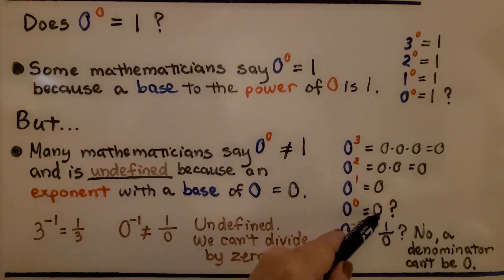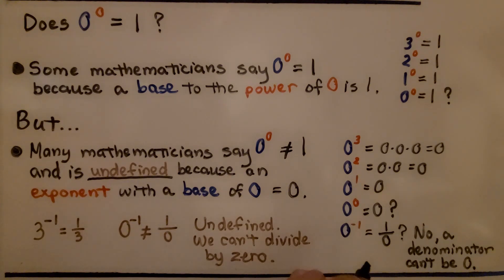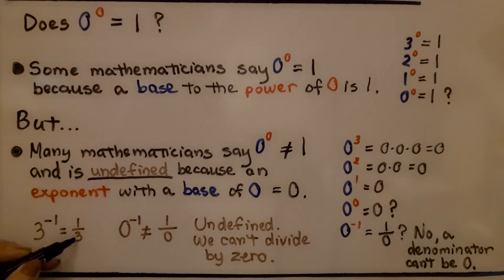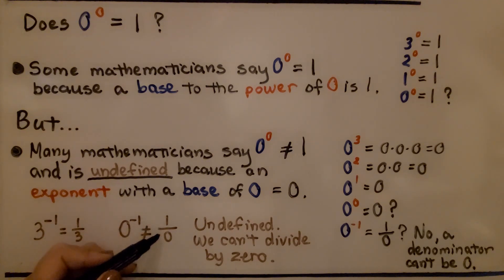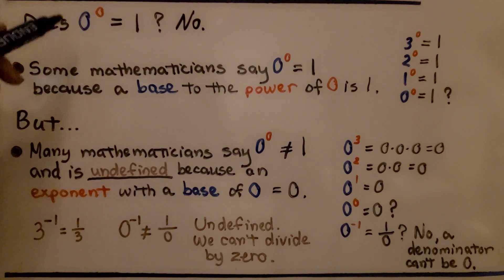So 0 to the 0 power — is it equal to 0? Look at 0 to the negative 1. If this were a 5 or a 9 or some other number, we'd get a fraction with the base as the denominator. But if we do 0 to the negative 1, we're going to have 1 over 0, which means 1 divided by 0. A denominator can't be 0. 3 to the negative 1 is equal to 1 third. But if we had 0 to negative 1, we can't do 1 divided by 0. Remember, fractions are little division problems. This is undefined because we can't divide by 0. So does 0 to the 0 power equal 1? No — it's undefined.